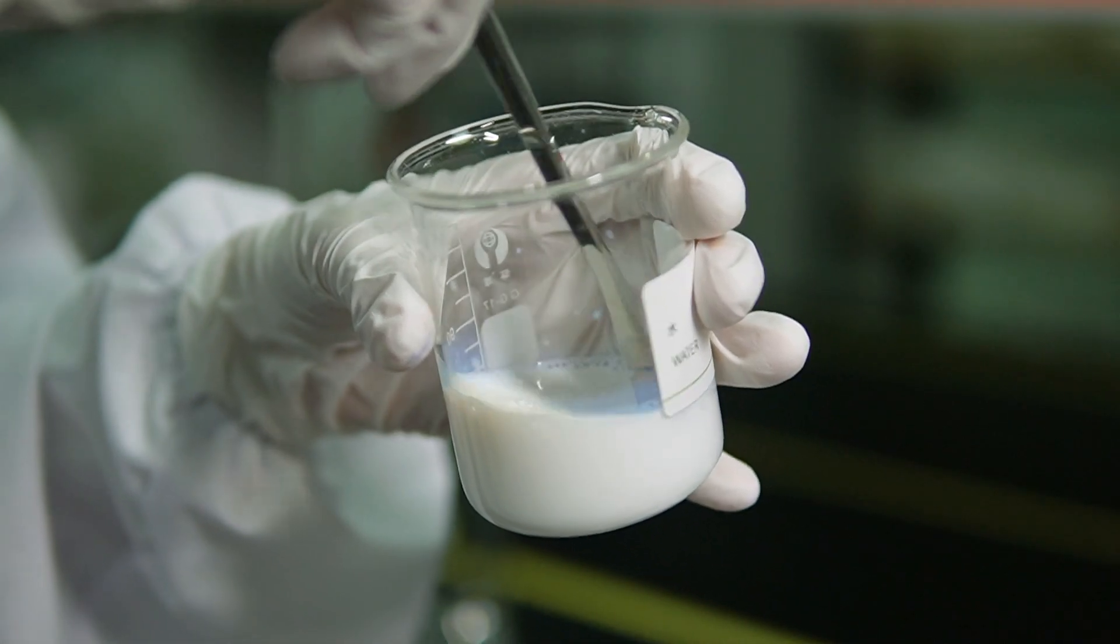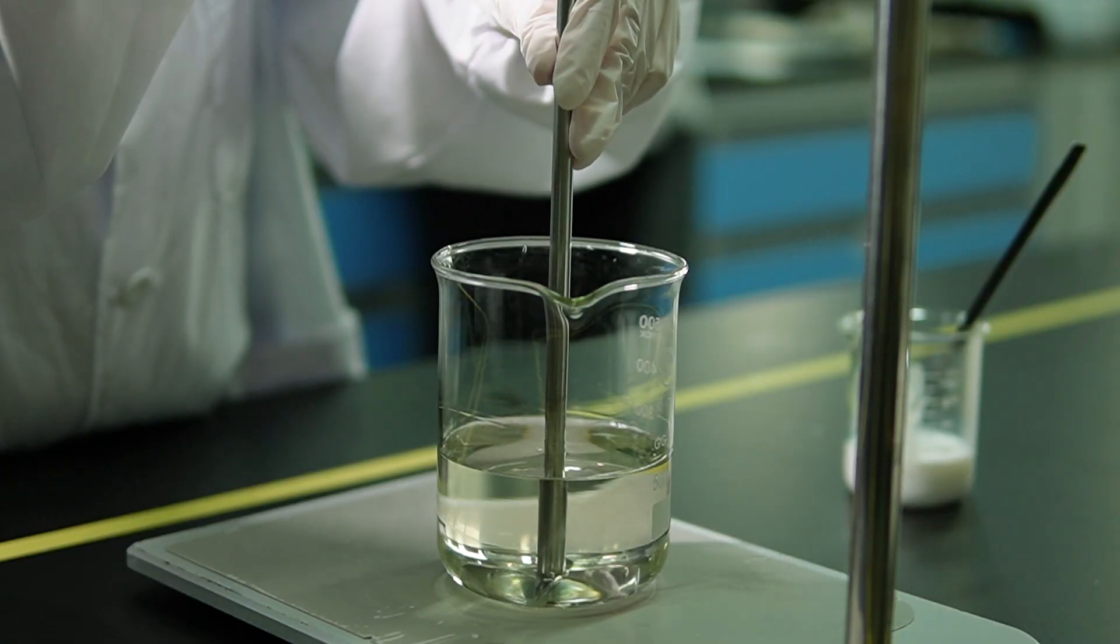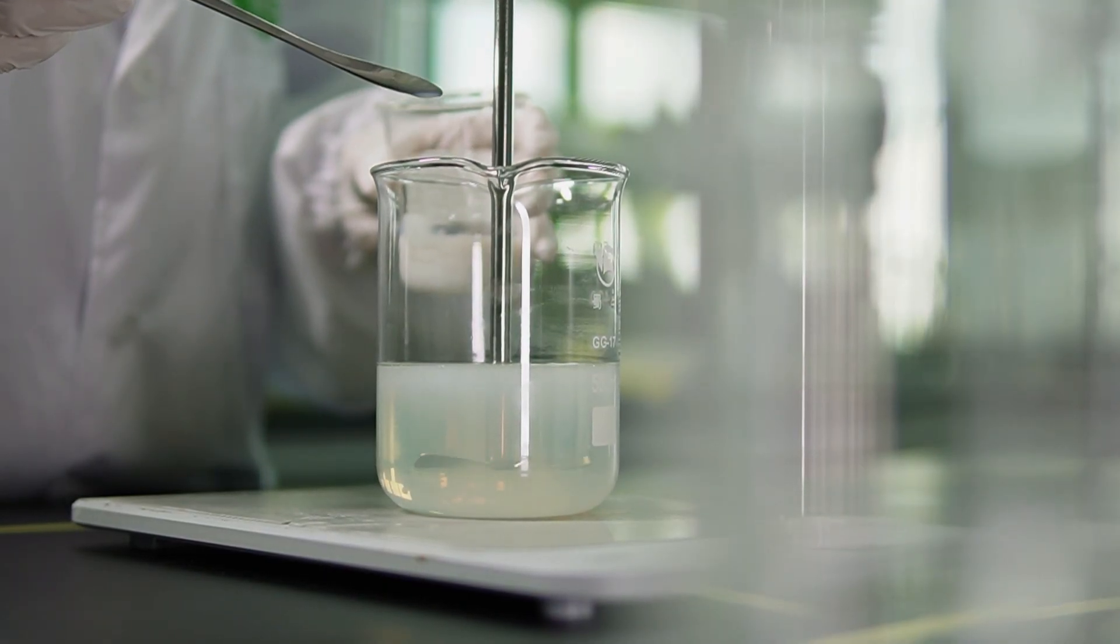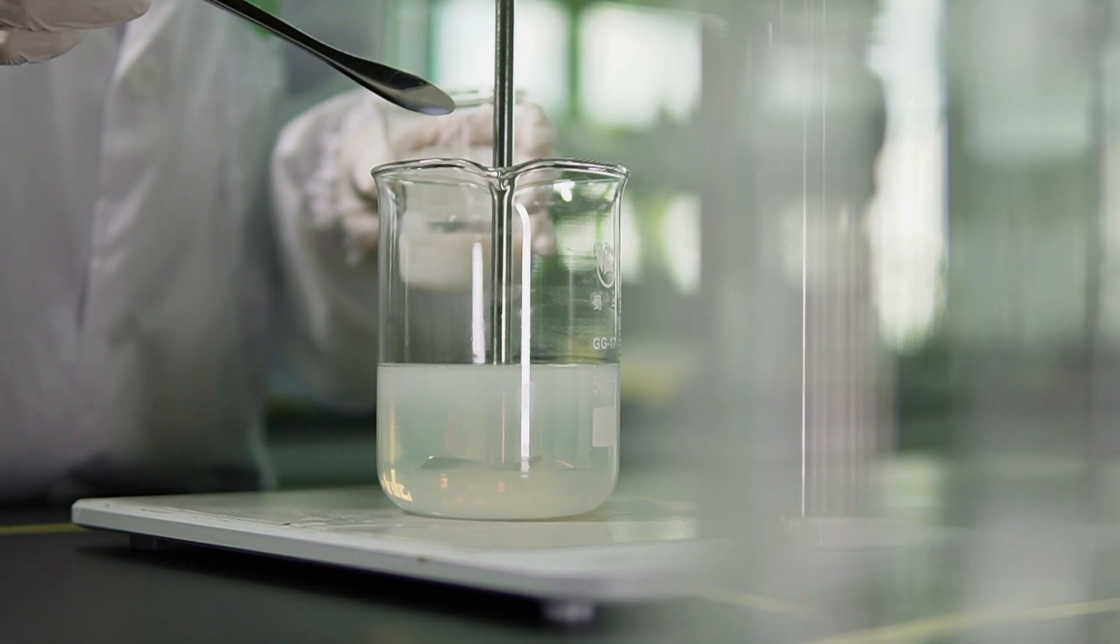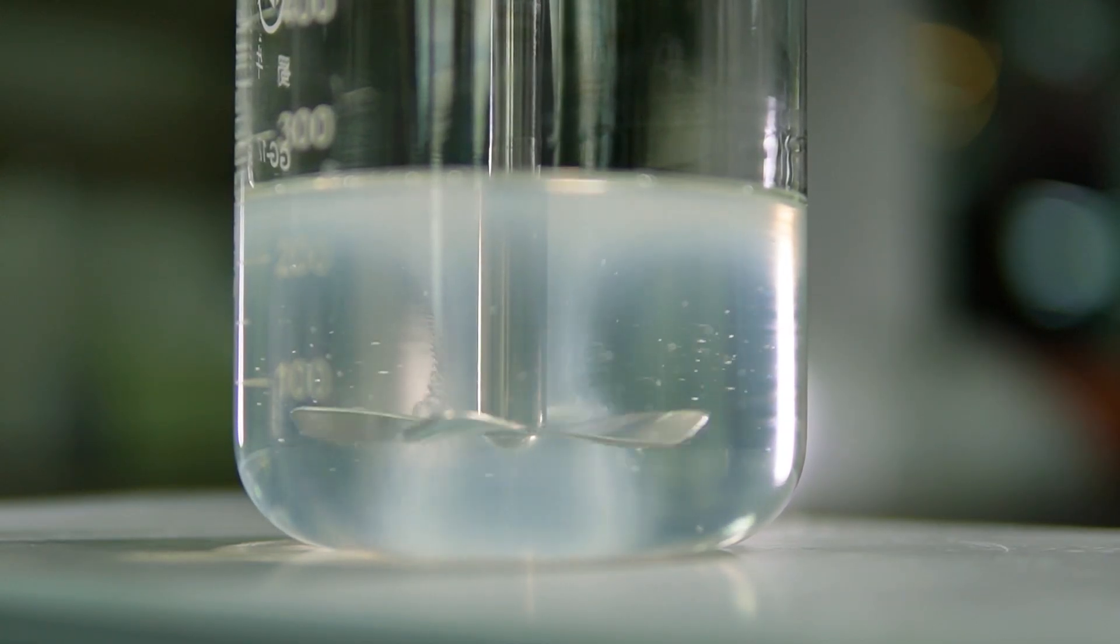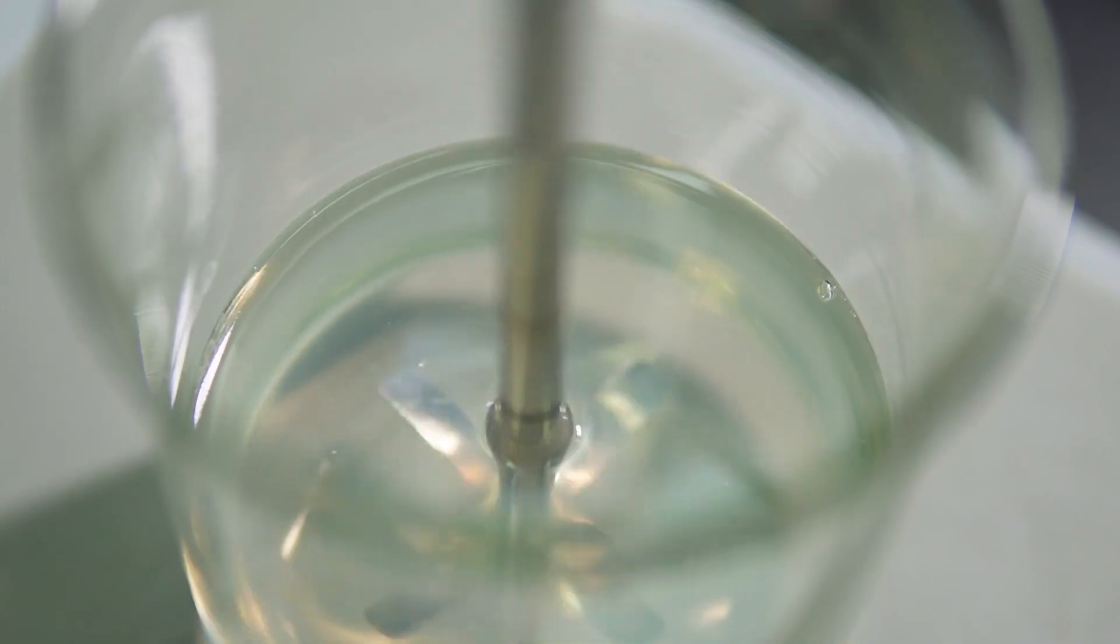Alright, now here's a part that requires a bit of finesse. When adding our pre-dissolved SF1, we don't just pour it in willy-nilly. No, we use a tiny spoon and carefully sprinkle it into the slurry, bit by bit. Why? Well, this way we avoid those pesky micelles from forming. Trust me, it makes all the difference in getting that smooth finish.